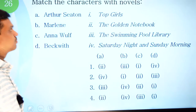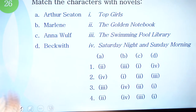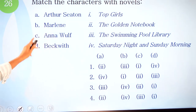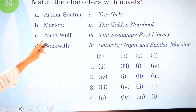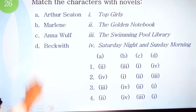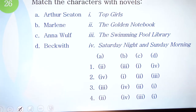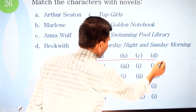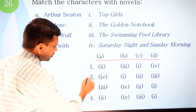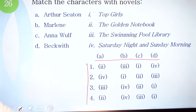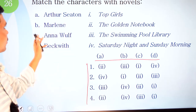Question number 26: match the characters with novels. We have characters: A) Arthur Seaton, B) Marlene, C) Anna Wolf, and D) Beckwith. The novels are: number one, Top Girls; number two, The Golden Notebook; number three, The Swimming Pool Library; and number four, Saturday Night and Sunday Morning. You have to pair all these characters with their correct novels.